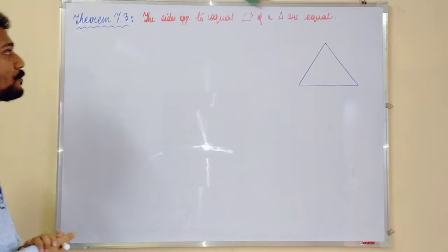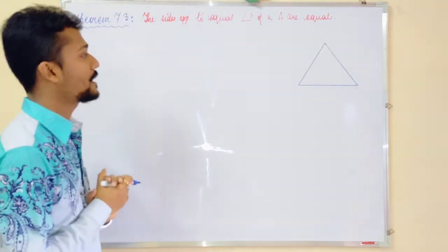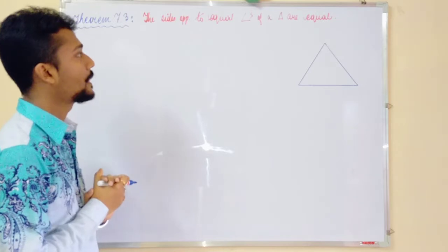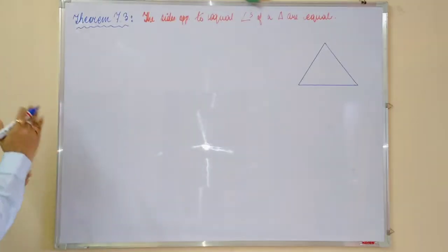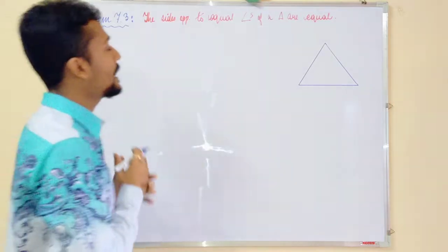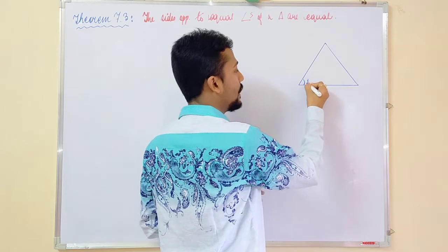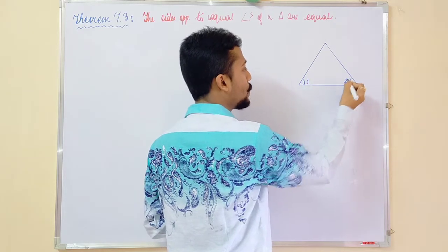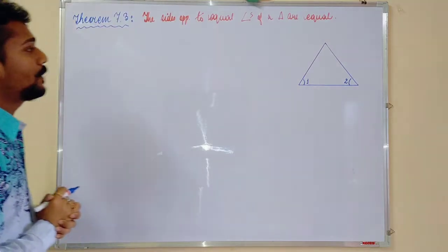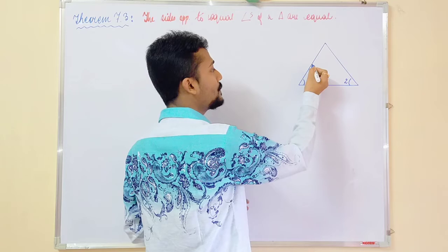That means what we have to prove is that the sides opposite to the equal angles of a triangle are equal. Say for example this angle, angle 1 is equal to angle 2. Angle 1 is equal to angle 2 and you have to prove that the side, this particular side, is equal to the side opposite.